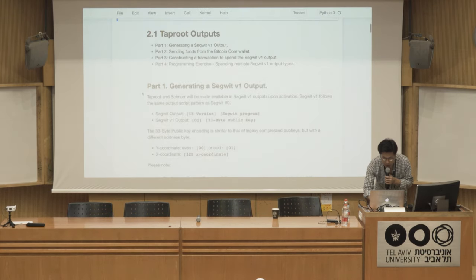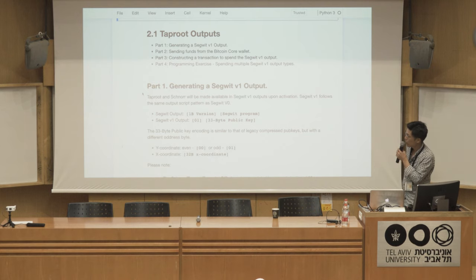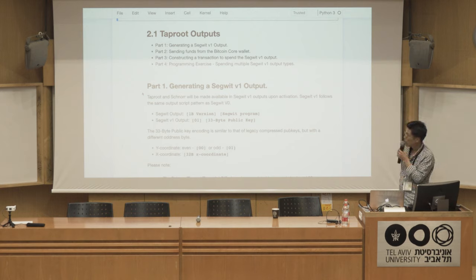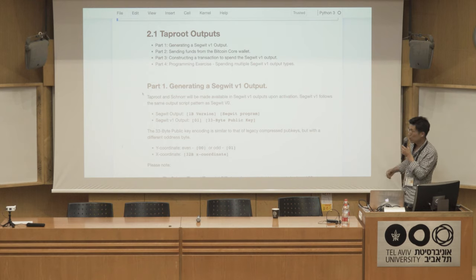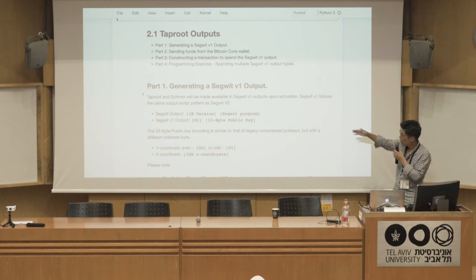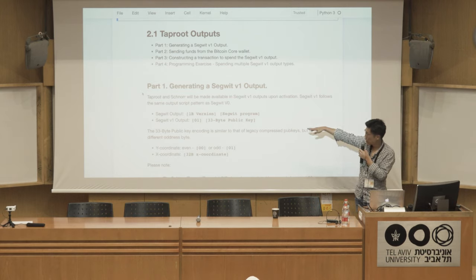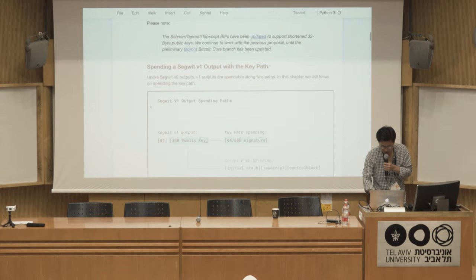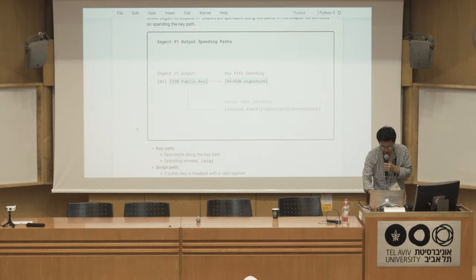How is Taproot going to be activated on chain? In the current proposal from Peter, Jonas, and collaborators, it's a segwit v1 output — a version byte and the witness program. In this case the witness program is the pubkey itself, not a hash, and it can be spent with a signature signed by the private key of that pubkey.